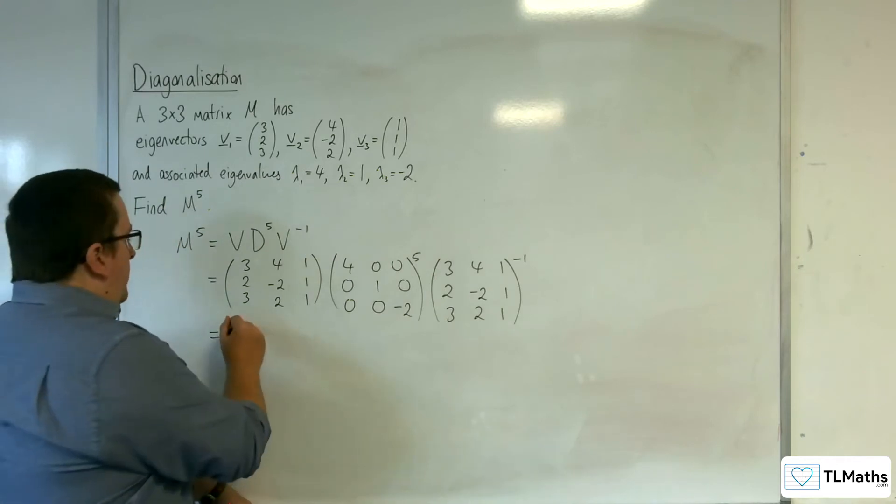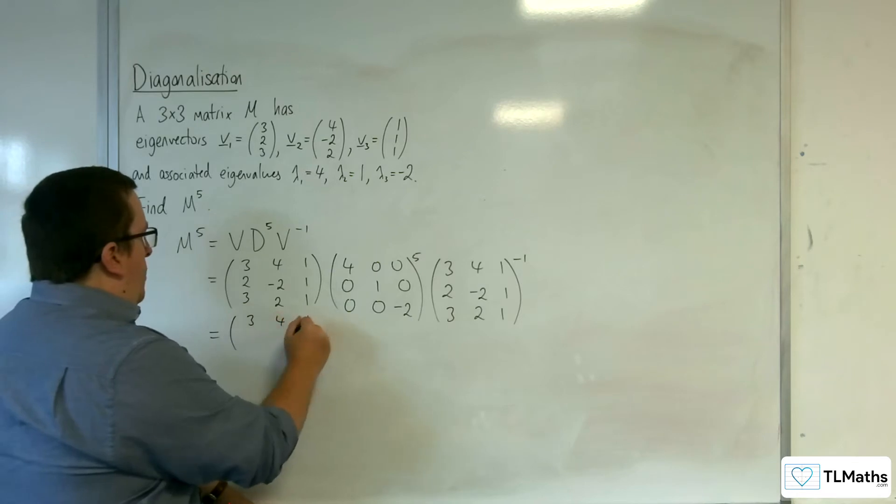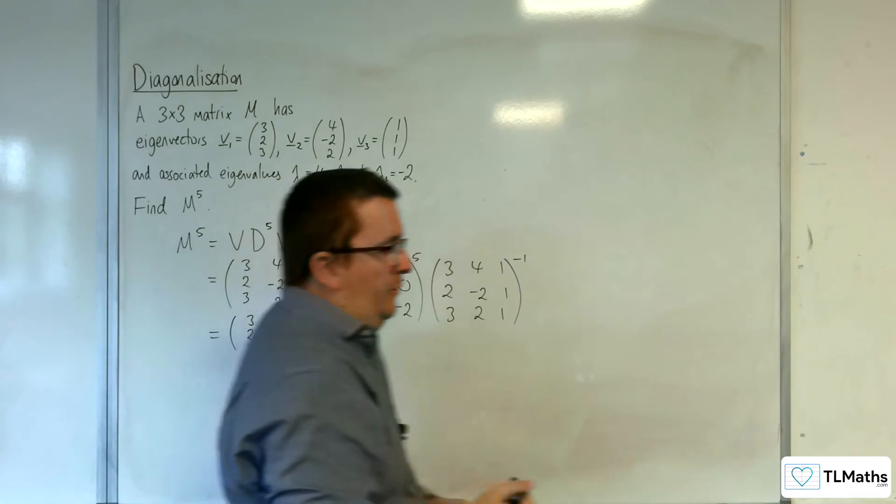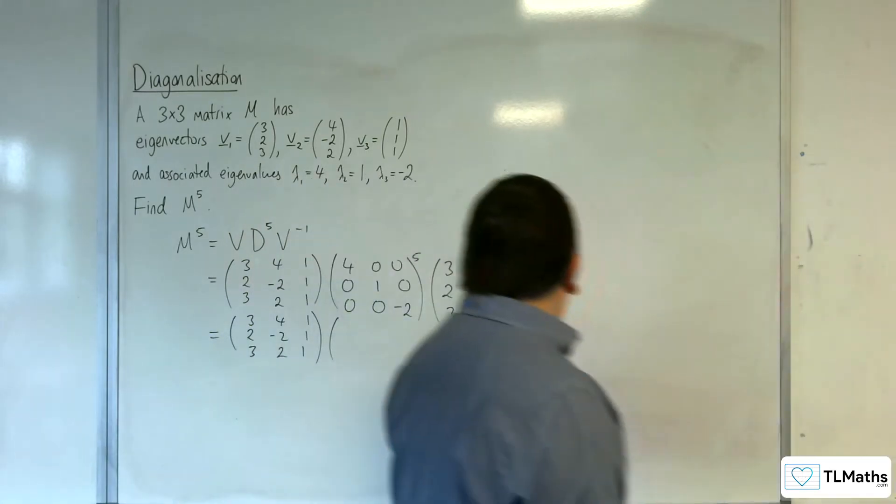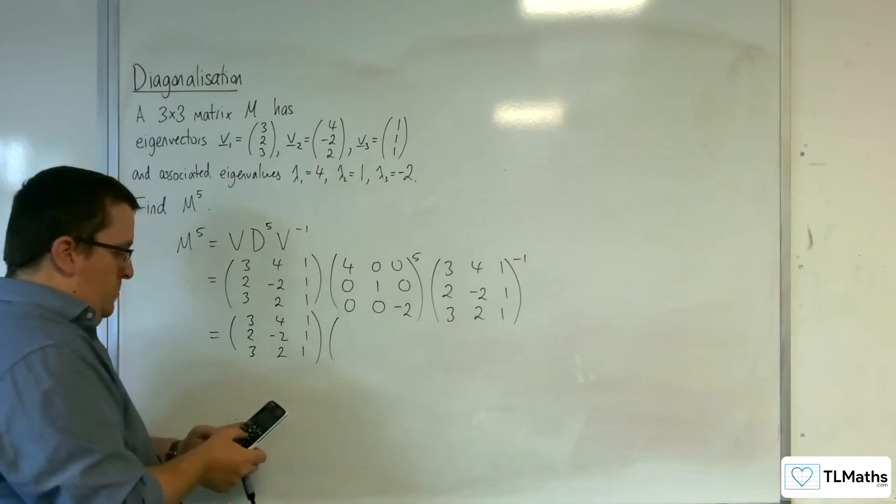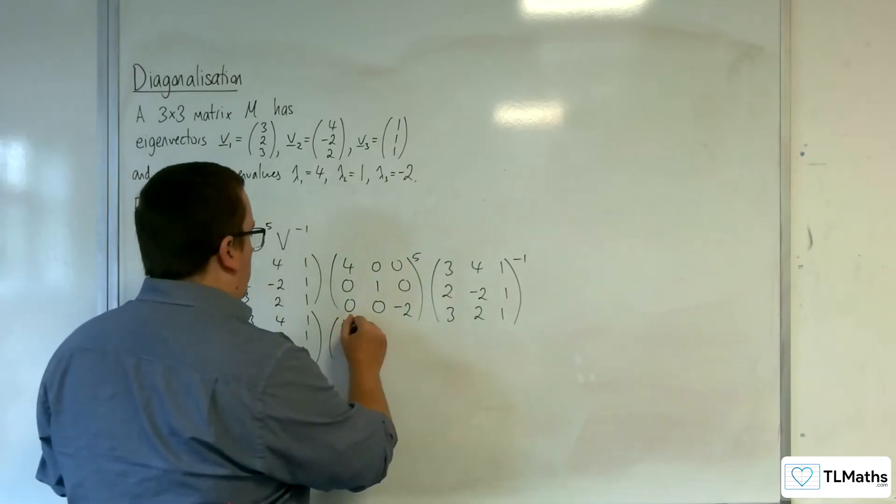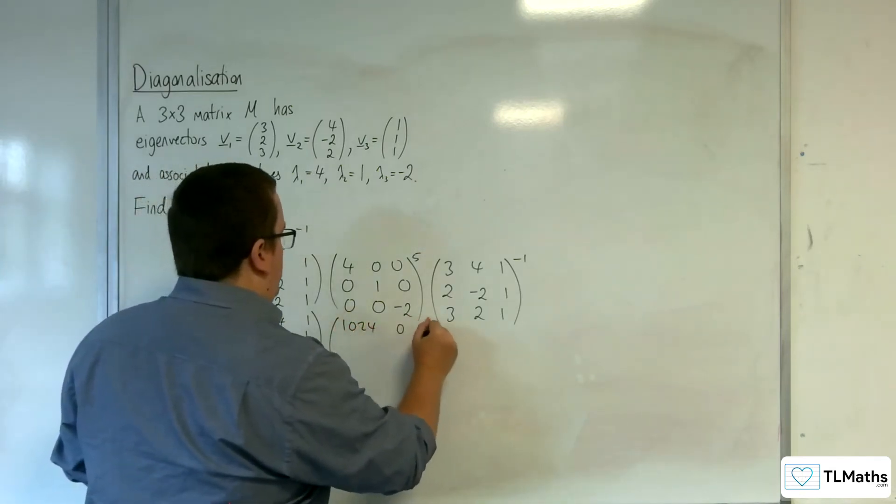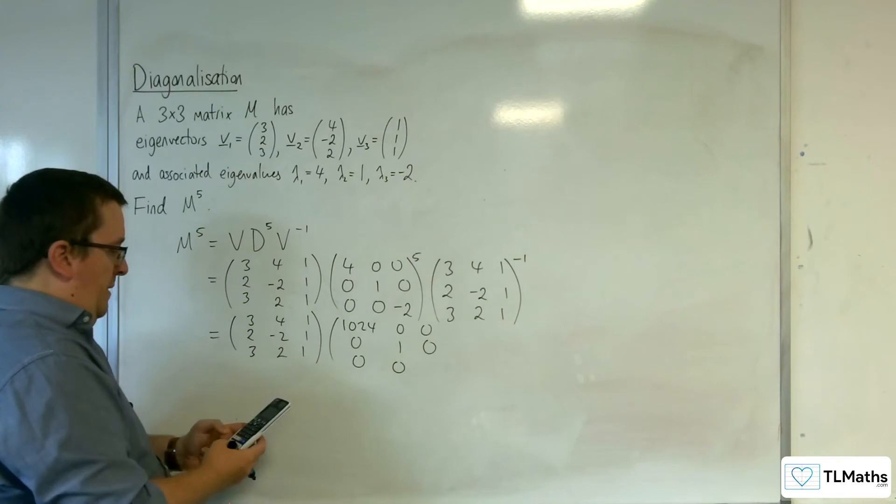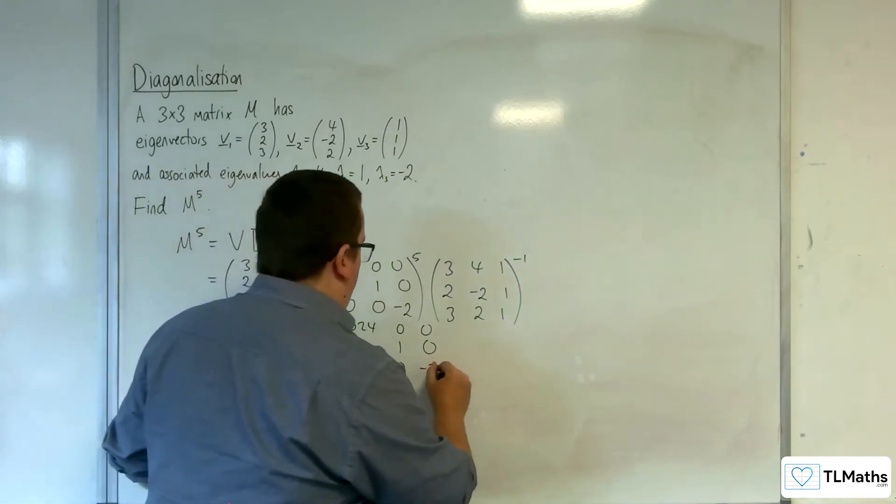So we've got 3, 4, 1; 2, minus 2, 1; 3, 2, 1, times by 4 to the power of 5, which is 1024, 0, 0; 0, 1 to the power of 5 is 1, 0; 0, 0, and then minus 2 to the power of 5 is 32, so we've got minus 32.